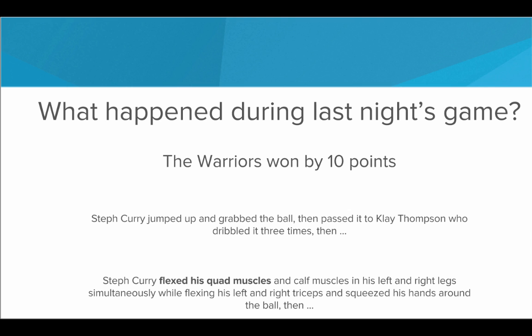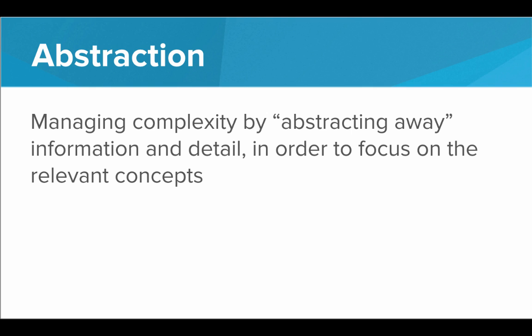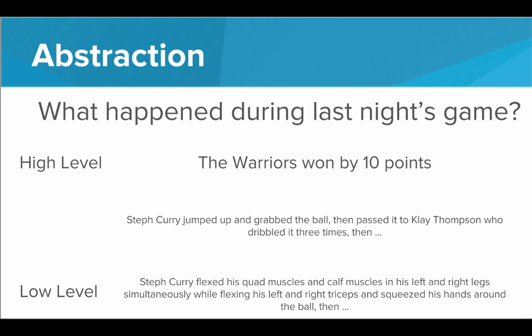So by choosing to respond with the top answer — the Warriors won by 10 points — you have successfully used abstraction. You've left out the unnecessary details. Abstraction is managing the complexity of a situation by abstracting away information and detail in order to focus only on the relevant concepts. The world is pretty complex. We could be talking at a lot of different levels of complexity, but we abstract away those really low levels. We don't want to talk about the muscles firing and the biochemistry reactions going on; we just want to talk about the high-level concepts. So we build out what we call layers of abstraction. The high level is the Warriors won by 10 points, whereas the low level is Steph Curry flexes quad muscles, and we can keep going lower or higher. We want to find the appropriate level of abstraction for the conversation.